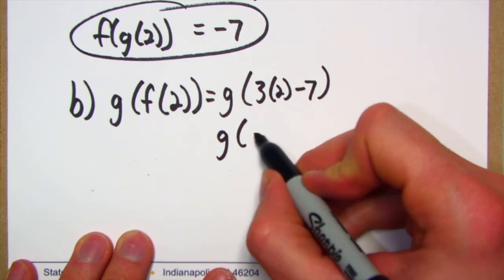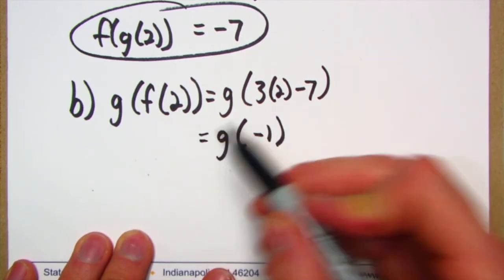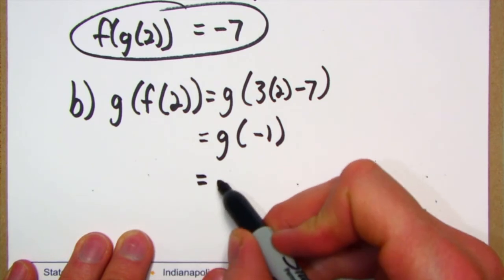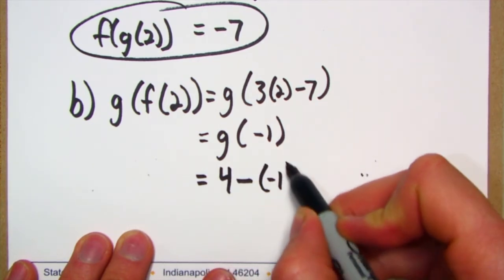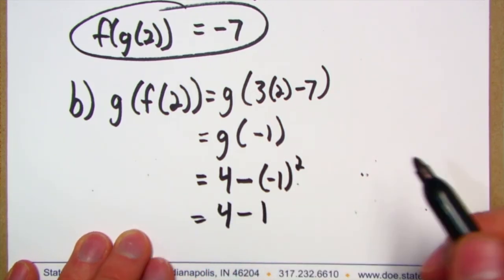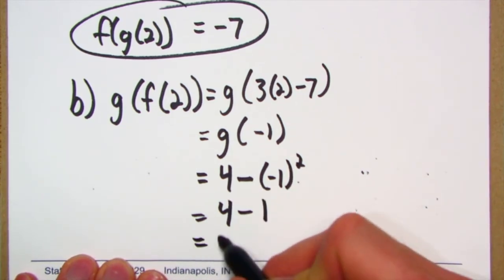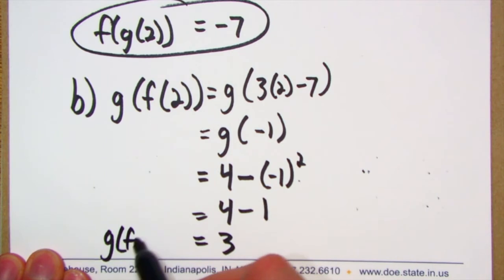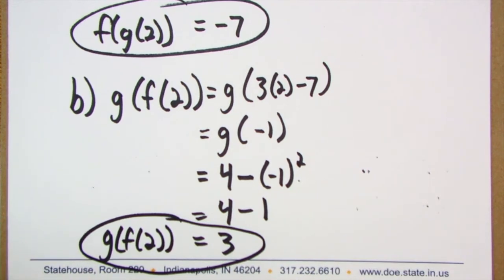3 times 2 minus 7 is negative 1. And so now I need to do g of negative 1. Well, g of negative 1 is 4 minus negative 1 squared, which is 4 minus 1 because that becomes a positive 1, which is 3.